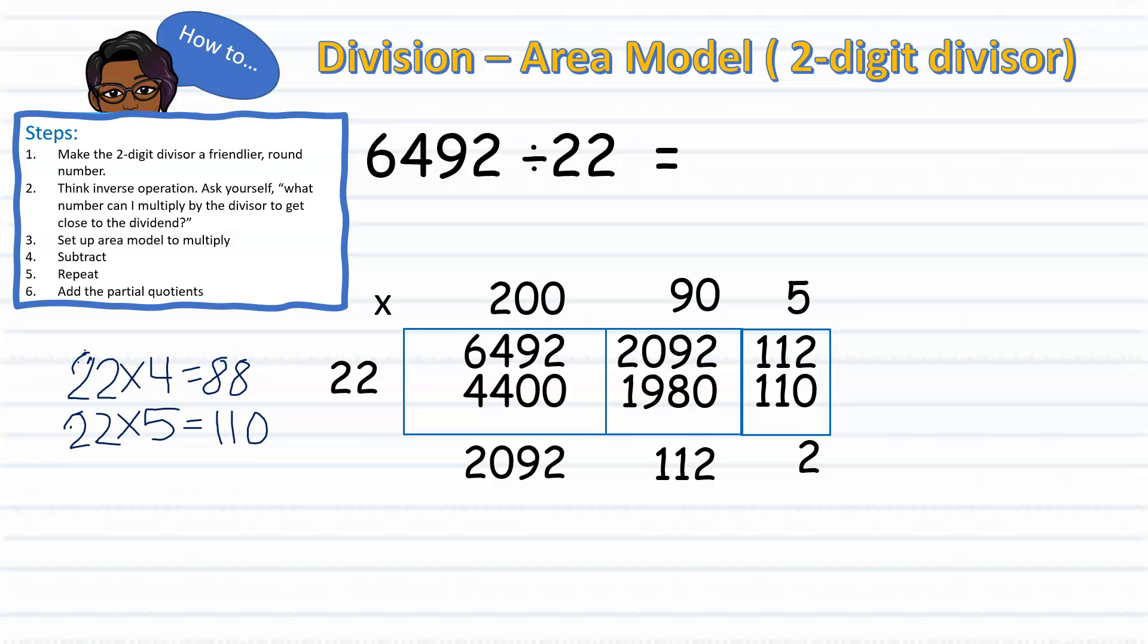Last step, add up the partial quotients. 200 plus 90, and 5 equals 295, and a remainder of 2. Therefore, I know that 6492 divided by 22 is 295 with a remainder of 2.